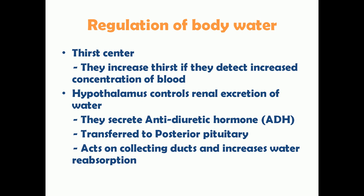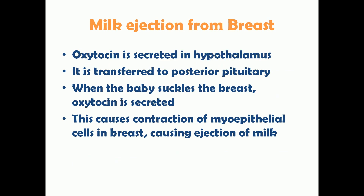Another mechanism by which the hypothalamus controls body water is by regulating renal excretion of water. The hypothalamus secretes anti-diuretic hormone (ADH), which is transferred to and stored in the posterior pituitary gland. When decreased body water is sensed by the hypothalamus, ADH is released from the posterior pituitary and acts on the collecting ducts in the nephrons, increasing water reabsorption.